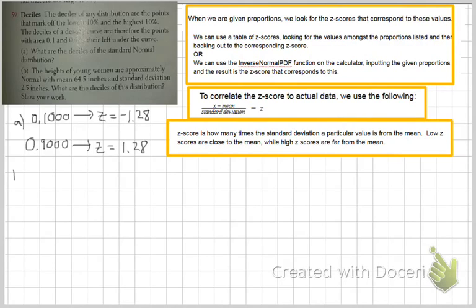In part b, we're asked to find more, and so these are the z-scores that correspond to the deciles. So the bottom decile is a z-score of negative 1.28 and the top decile is the positive 1.28.